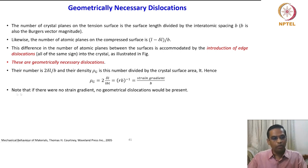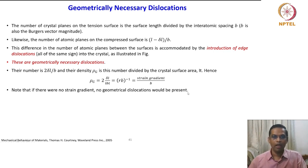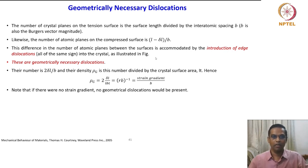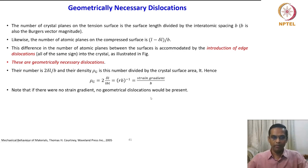Note that if there were no strain gradient, no geometrically necessary dislocations would be present — that is quite obvious. If there is no strain gradient, we would not have introduced any edge dislocations on the top surface. If it is a perfect strip of single crystal, there is no strain gradient; the strain gradient was produced by bending it.